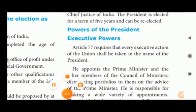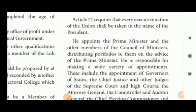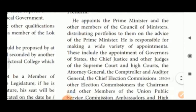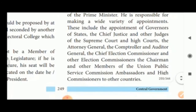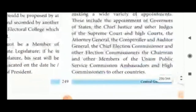Executive powers: Article 77 requires that every executive action of the union shall be taken in the name of the President. He appoints the Prime Minister and other members of the Council of Ministers, distributing portfolios on the advice of the Prime Minister. His appointments include governors of states, Chief Justice and judges of the Supreme Court and High Courts, the Attorney General, the Comptroller and Auditor General, the Chief Election Commissioner, members of the Union Public Service Commission, and ambassadors and high commissioners to other countries.